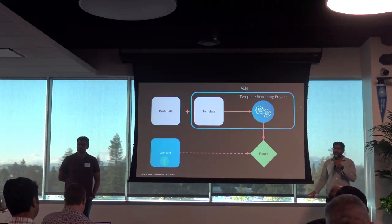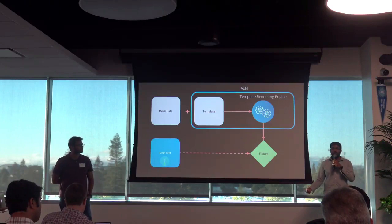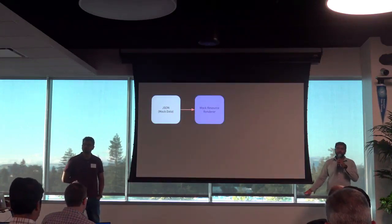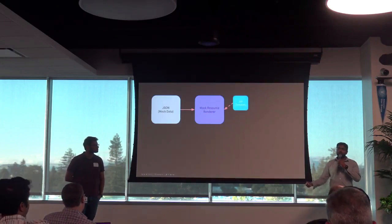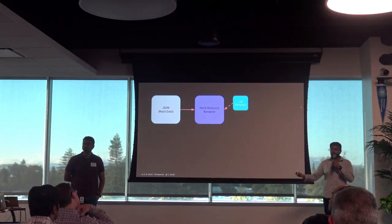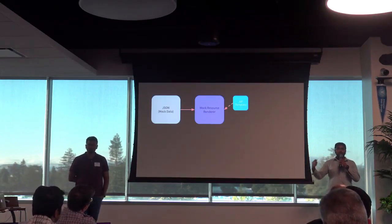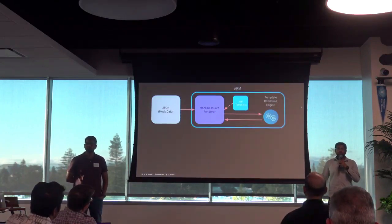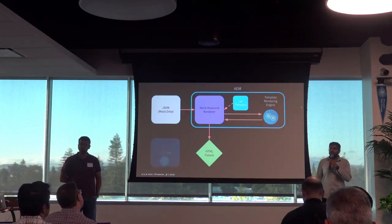How do we solve this for continuous integration? We have JSON mock data, and we pass that to something we created called a mock resource renderer — essentially a service that proxies requests between the AEM internals. It takes the GSP template, knows from the mock data which GSP to render, pulls it in, sends it to the template rendering engine, and gets back the output. The mock resource renderer then spits the code out as an HTML fixture that unit tests can use. This is always in the context of a running AEM instance.